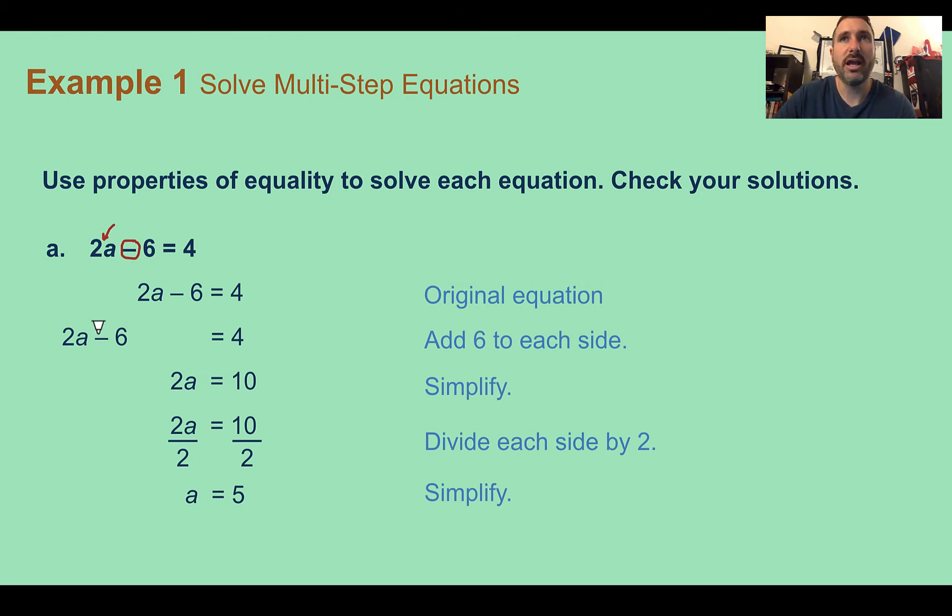First thing I would do, going the reverse order of operations, I'm going to undo that minus 6 by adding 6 to each side. Remember, whatever we do to one side, we have to do to the other in order to keep our equation equal. Negative 6 plus 6 makes 0, so I'm left with just 2A. And then combining these together, 4 plus 6 gives us 10.